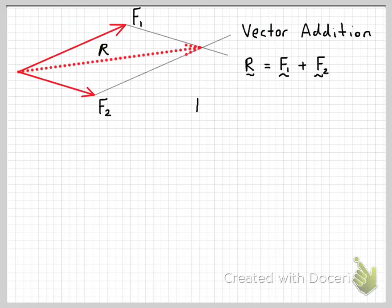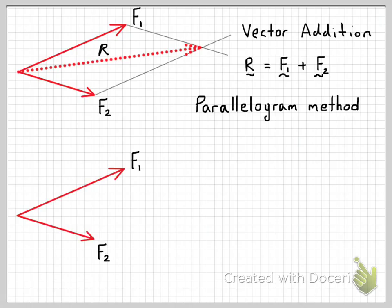So that's the parallelogram method. So now we'll look at the vector tip to tail method. And we'll start off with our two vectors, f1 and f2, that we had before. And the method here is to move one of our vectors such that we move the tail of that vector to the tip of the other vector.